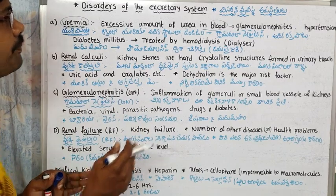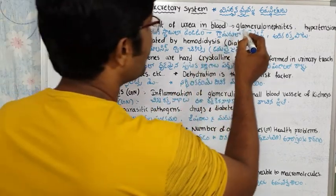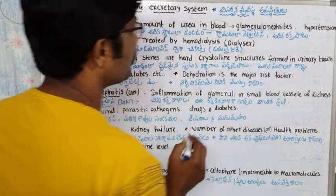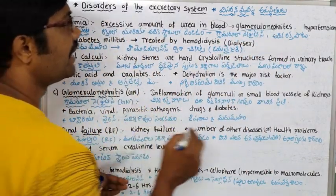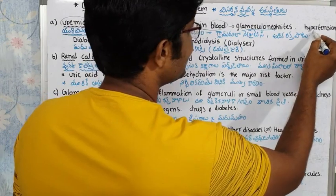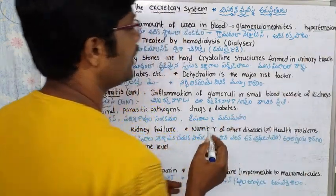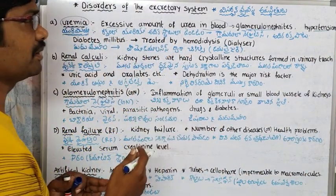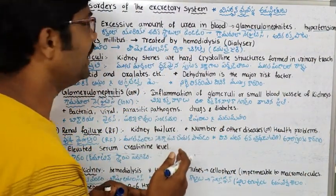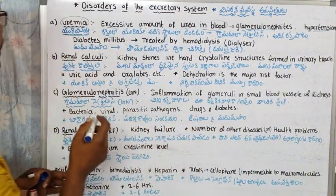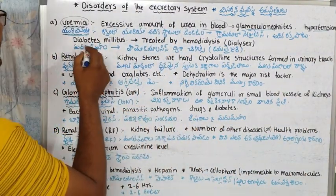There are complications such as nephritis and hypertension — that is, high blood pressure — related to the excretory system when urea is excessive.